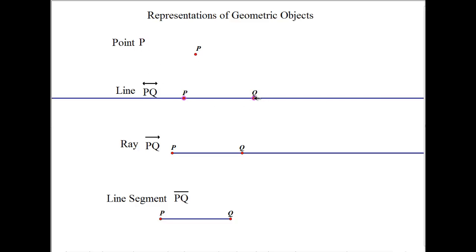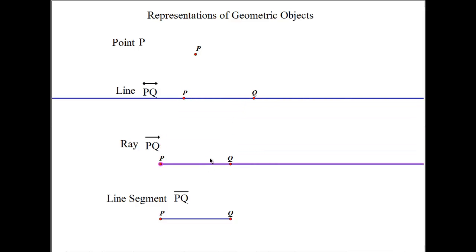If you take any two points in a plane, the line that passes through those two points is represented with arrows pointing in both directions, showing you it's a line. A ray is part of a line that lies to one side of a point. You can see how it's all the points going in one direction toward Q. P is called the vertex, or the start point of the ray.